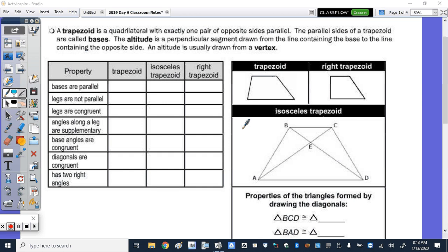Let's take a look at the properties to start with just the trapezoid and then we'll talk specifically about the isosceles and right. So we know our bases are parallel, so every trapezoid has bases parallel and the legs are not parallel. Legs are congruent? Nope.